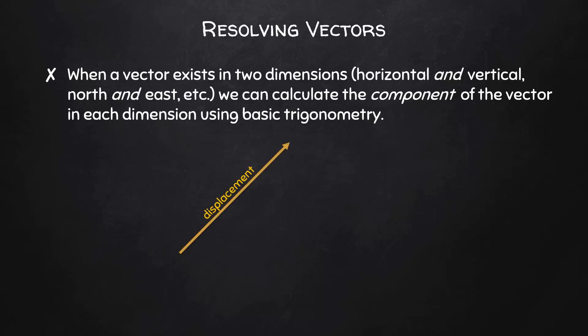Here, we have a displacement vector at some angle theta. There is a component of this displacement that is horizontal, and another component that is vertical. The horizontal component of the displacement is equal to the displacement times the cosine of the angle. And the vertical component of the displacement is equal to the displacement times the sine of the angle.